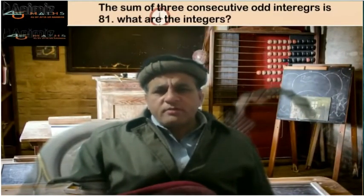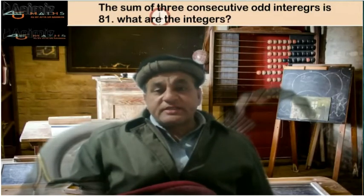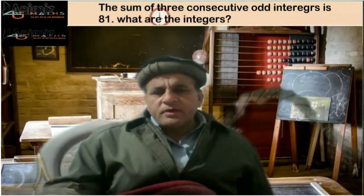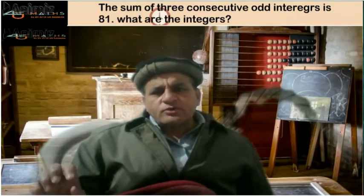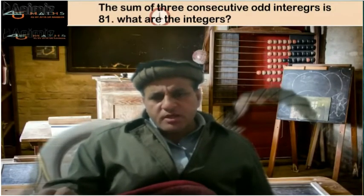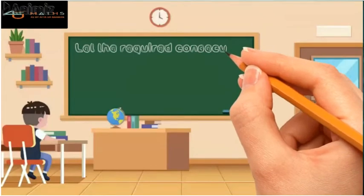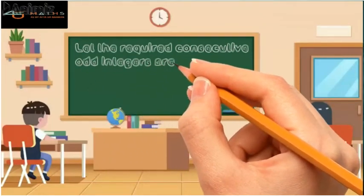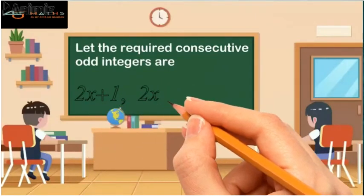Now coming to question number 4, it says that the sum of three consecutive odd integers is 81. What are the integers? Since in this question we are asked about consecutive odd integers, we will select the numbers as 2x plus 1, 2x plus 3, 2x plus 5. So we suppose that the required consecutive odd integers are 2x plus 1, 2x plus 3, and 2x plus 5.